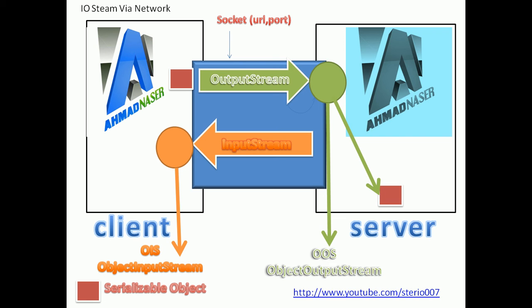For the opposite direction — when we want to receive an object from the server — we use the input stream. The server outputs the object and we take it from the input stream. The ObjectInputStream reads the serializable object and returns it to the client. Whatever is sent back must be serializable.